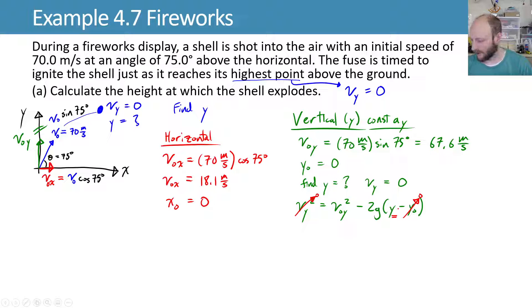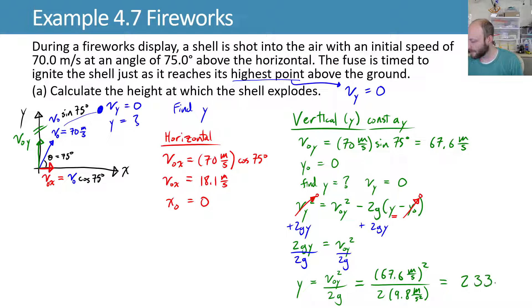So we'll do some algebra and add 2gy to both sides. So we get 2gy is equal to v naught y squared. We can now divide by 2g, cancel it out on the left. And we get an expression for y that says that my height at this point in time should be my initial velocity squared over twice gravity. We can plug in the values that we know for these quantities. And we end up with a number, when you plug this in, that should be around 233 meters in the air.